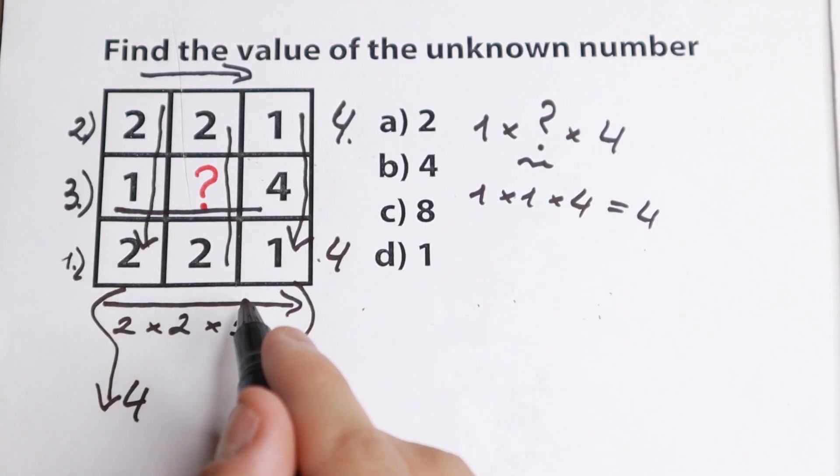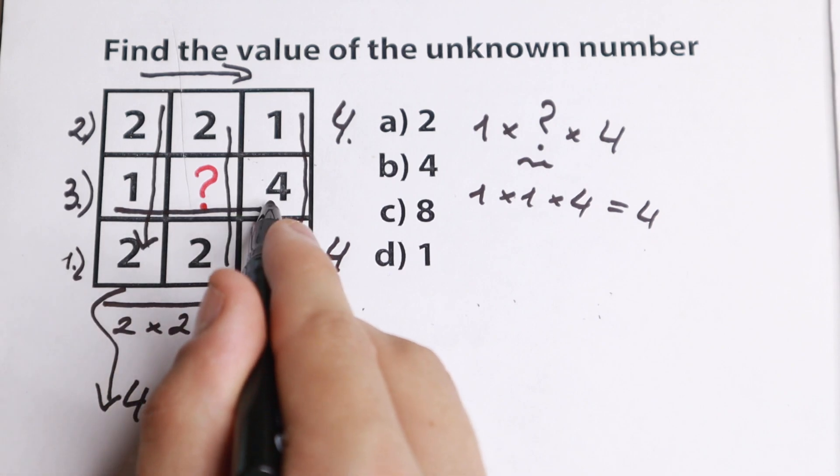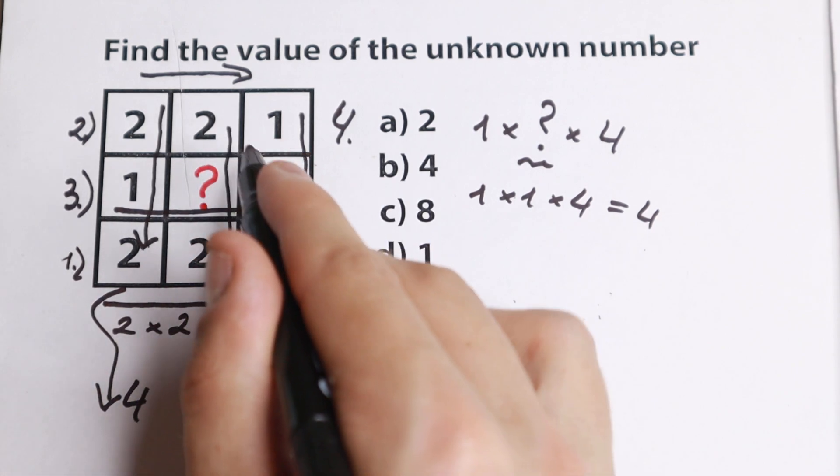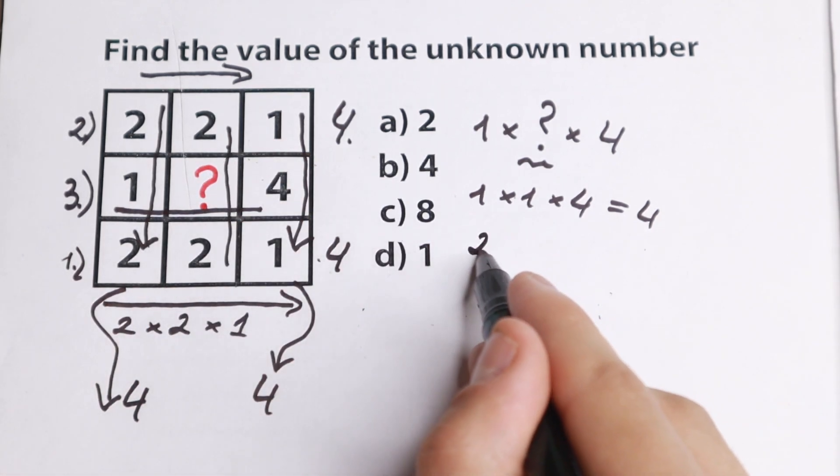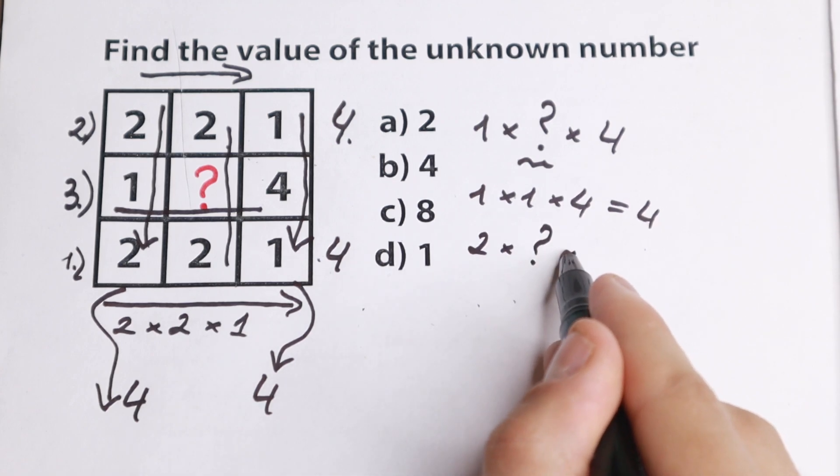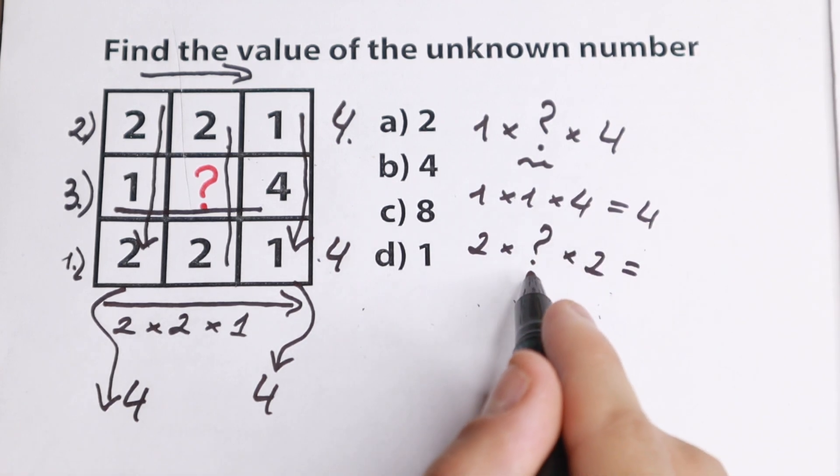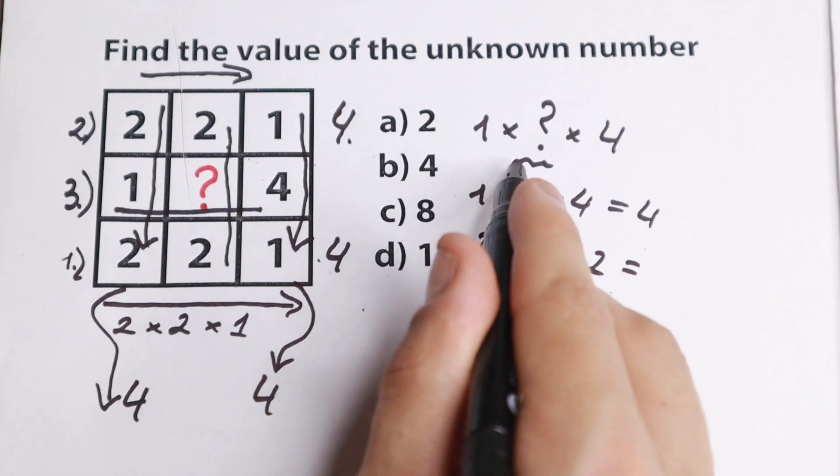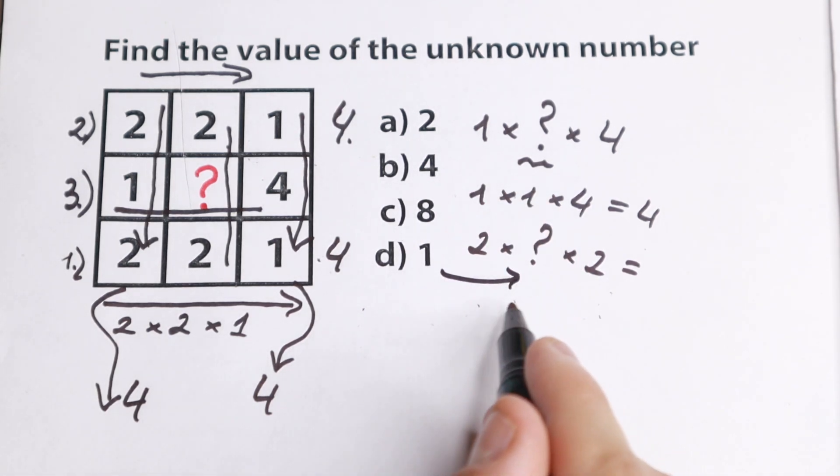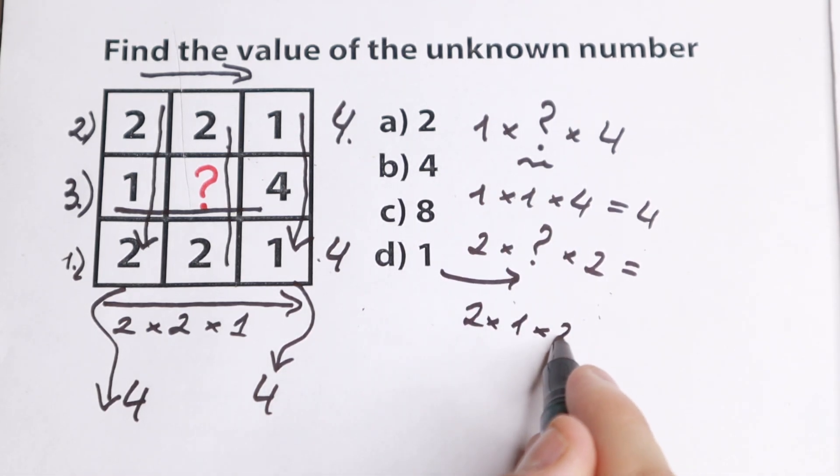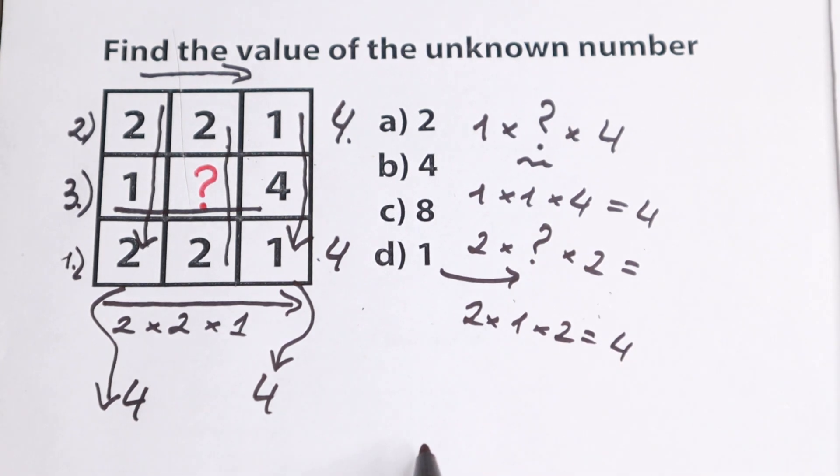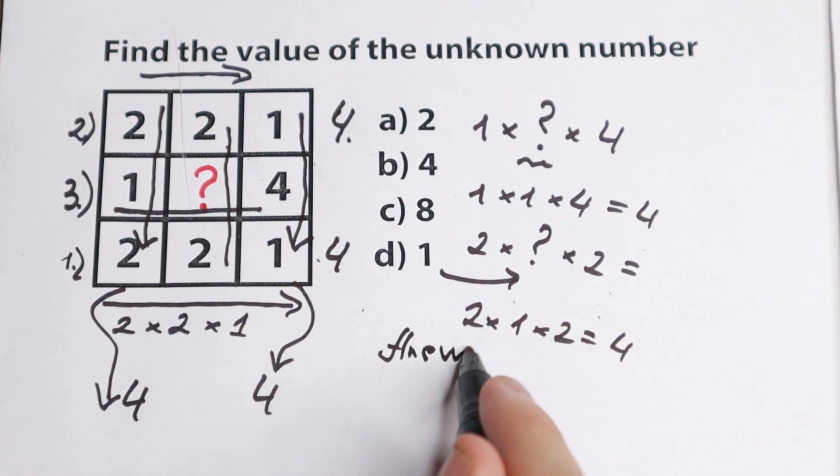But let's check it in a vertical way. We have 2 times this number, 2 times the number we need to find and times 2. What is this number? We find that this will be equal to 1. So 2 times 1 times 2 equals 4. So absolutely correct. Our answer is 1.